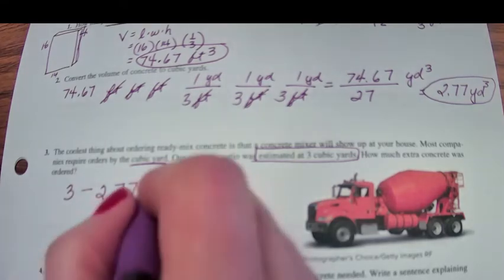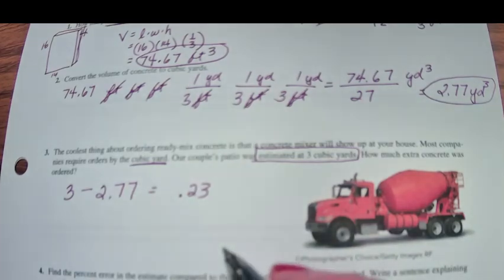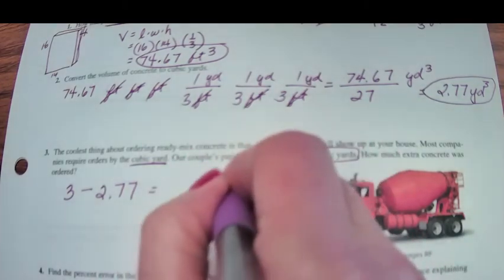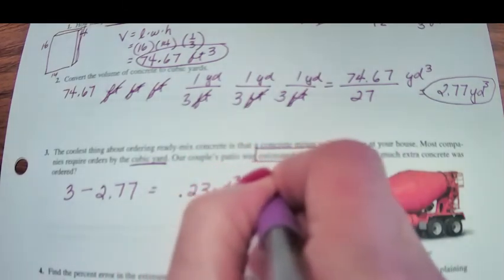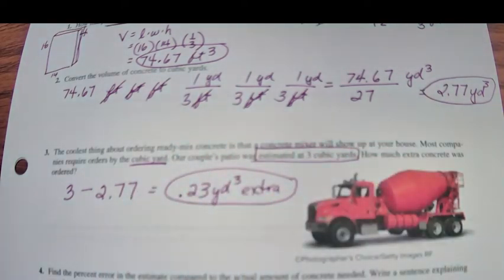How much extra concrete was ordered? We ordered 3, and we only needed 2.77. So 3 minus 2.77, 0.23 cubic yards extra. They're bringing a little extra concrete, but at least we won't run out, and we have to order it in the whole cubic yard numbers.